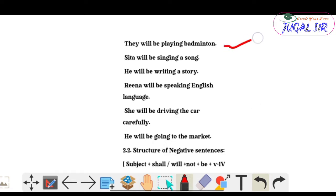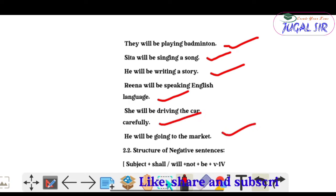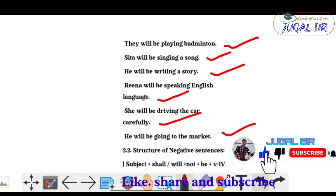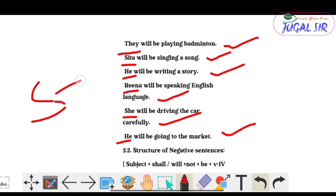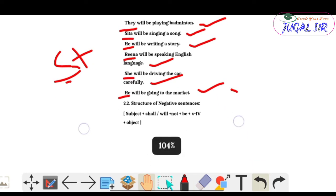More examples: 'They will be playing badminton', 'Sita will be singing a song', 'He will be writing a story', 'Rana will be speaking English language', 'She will be driving the car carefully', 'He will be going to the market'. Check all subjects — will be or shall be according to subject, then V4 (-ing form), then object.